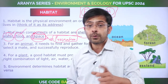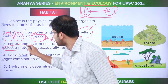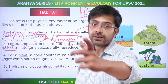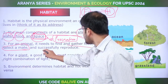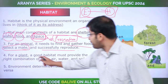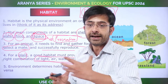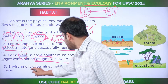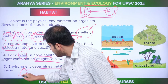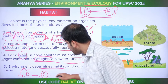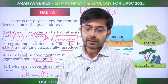For an animal, it needs to find and gather food, select a mate, and produce the next generation. For a plant, a good habitat must provide the combination of light, air, water, and soil. The environment determines the habitat and not vice versa — only because the environment has both biotic and abiotic factors which determine the creation of life, and then life decides where to live.